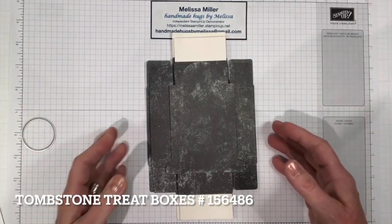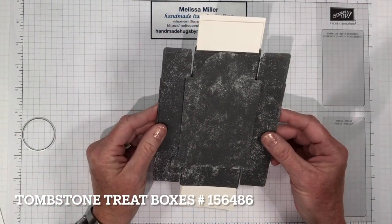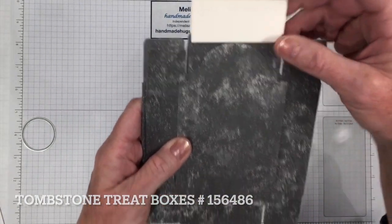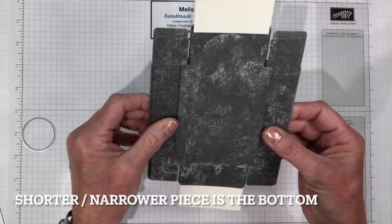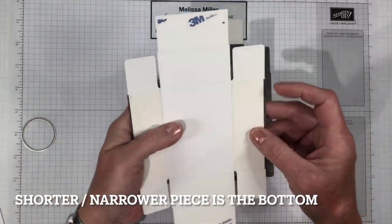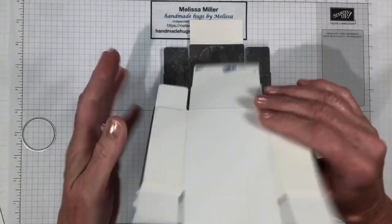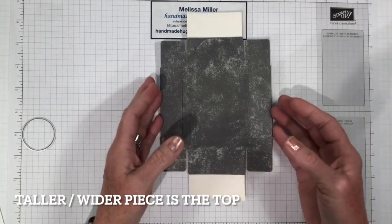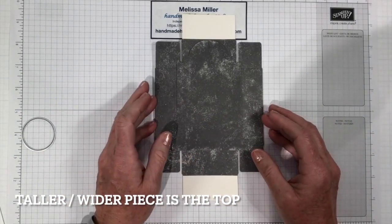Let's go ahead and get started. When you purchase the tombstone boxes you get eight per pack and you get two sizes. You get one that is just a little bit longer and a little bit narrower, and that's going to be your bottom box. They already have the adhesive on them so you don't have to worry about that.